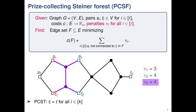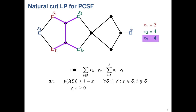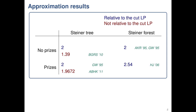There's a very natural LP for this problem — the cut LP. We have y_i for whether we buy an edge or not, and z_i which is 1 if we don't connect terminal pair i. If we do connect terminal pair i, then every cut separating S_i and T_i should have total y-value of at least 1 in the set of edges we buy.